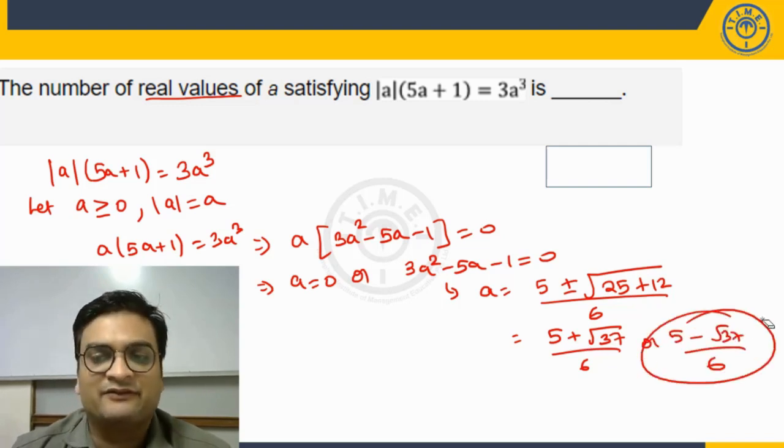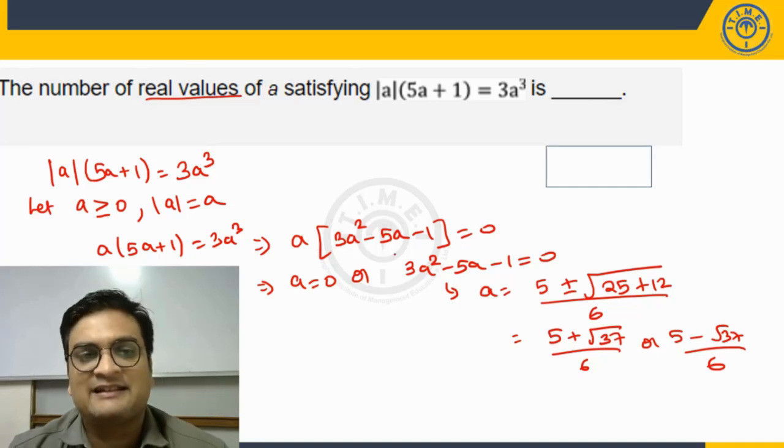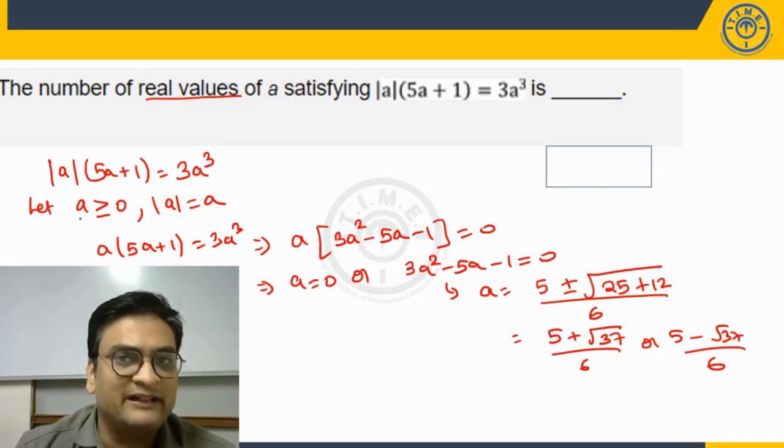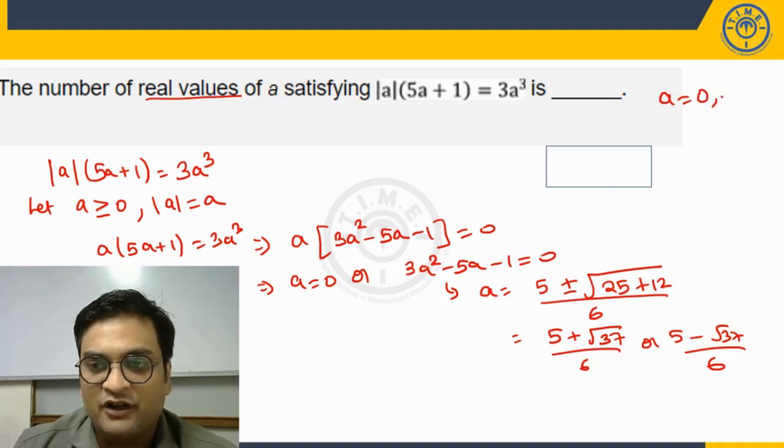The reason is this will be negative. We do not want that. So thus can I say for this case, when I take a is greater than or equal to 0, I get two possible real values for a, 0 or 5 plus root 37 by 6.